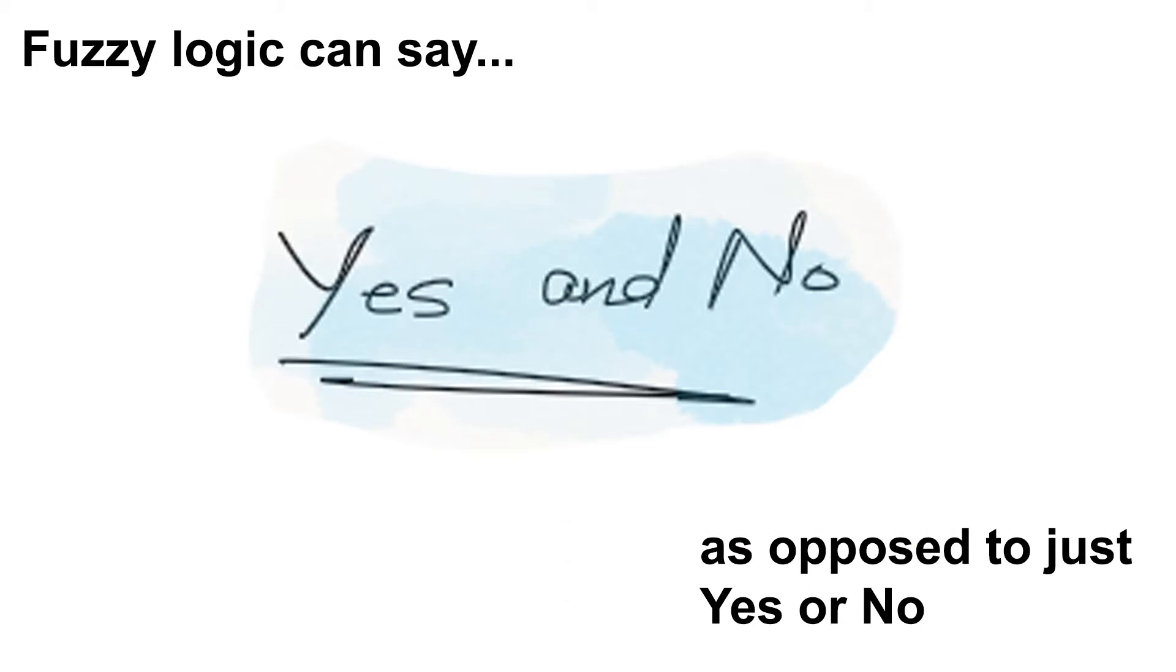Fuzzy logic is special in the sense that it can say yes and no at the same time, as opposed to just yes or no. An egg is a sphere to a certain degree, less than a cricket ball. However, it is a part of a set of spherical shapes. So yes, it is spherical, but no, it is not a perfect sphere.